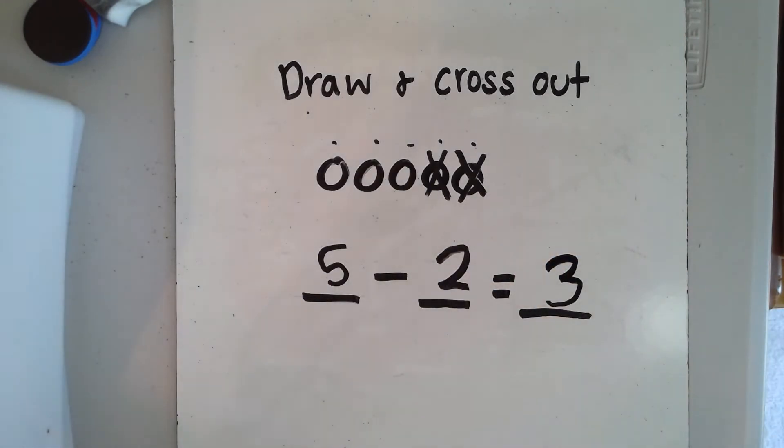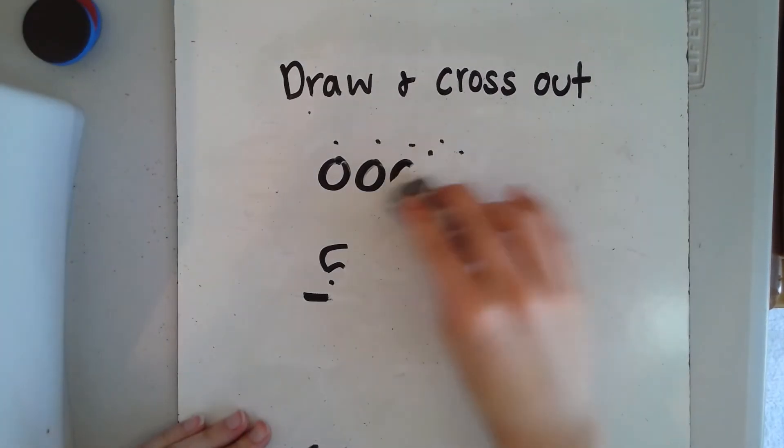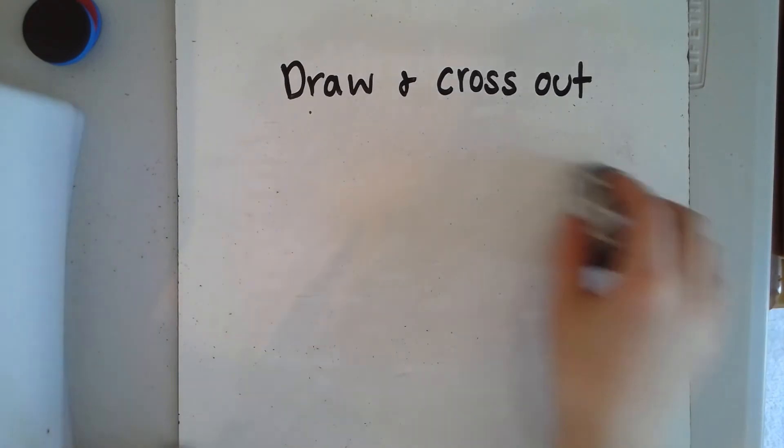Let's try another one. Remember, this is our draw and cross out strategy.